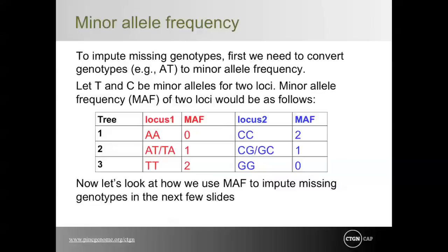The minor allele is the allele with frequency less than 0.5 in the population. Geneticists believe minor alleles have a greater effect on phenotype than major alleles. We calculate minor allele frequency for each locus across all genotyped trees and convert genotypes to the number of minor alleles each individual has — called gene content — where each tree has 0, 1, or 2. These frequencies are sometimes converted to minus 1, 0, and 1 for ease of matrix calculations. Minor allele frequencies are used to impute missing genotypes.